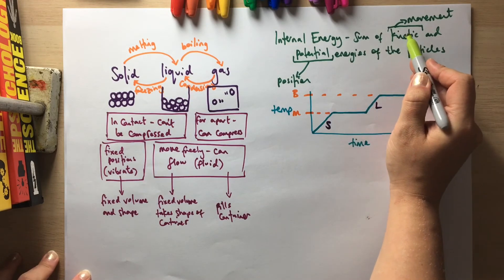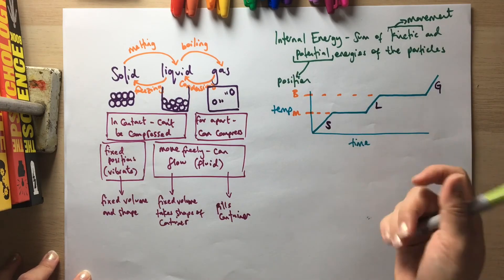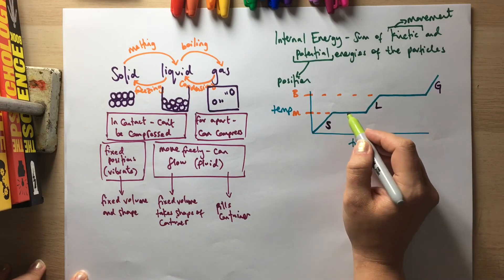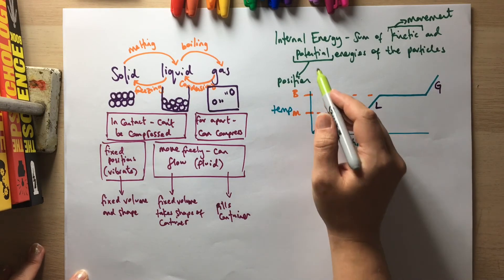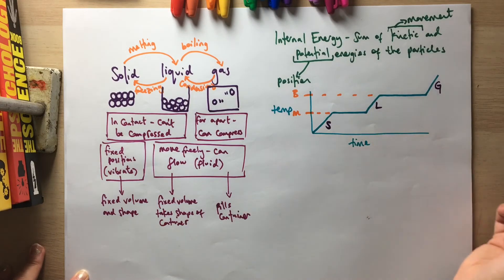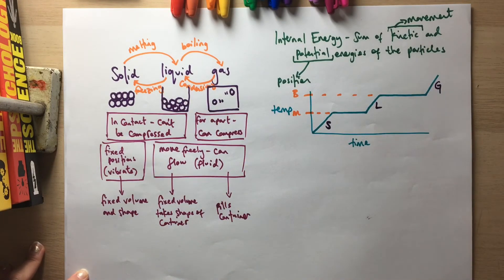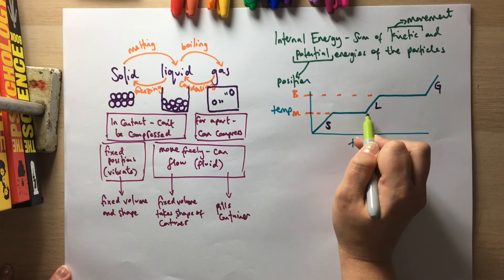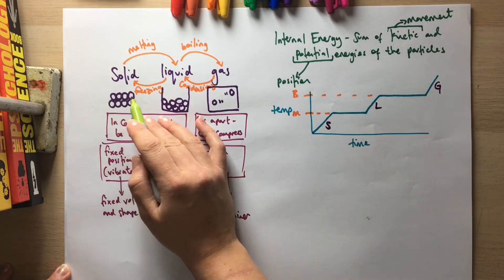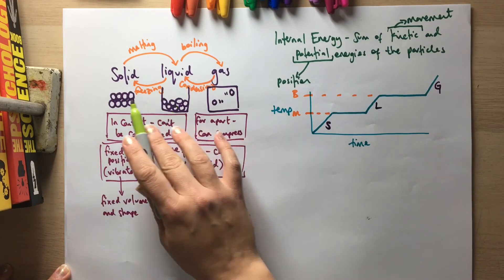The temperature changes when kinetic energy is changing. As we're putting energy into the system by heating, when the temperature is rising the kinetic energy is increasing. When it's changing state, the kinetic energy is no longer increasing but the potential energy is increasing, because the position of the particles changes at that point. The particles get much further apart going from liquid to gas. These flat sections are called latent heat — latent means hidden — and latent heat is the energy used to change states, related to the intermolecular bonds between particles changing due to particle position.